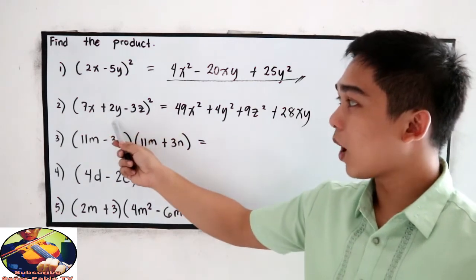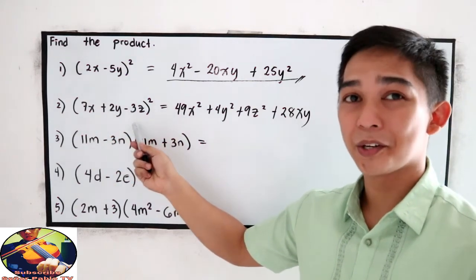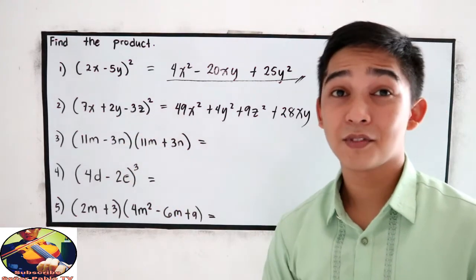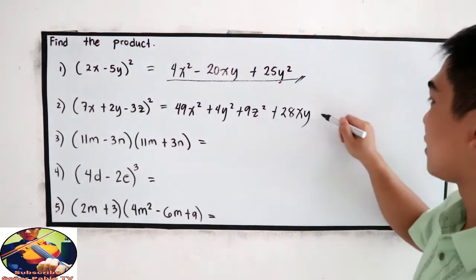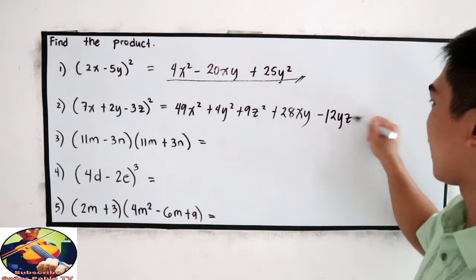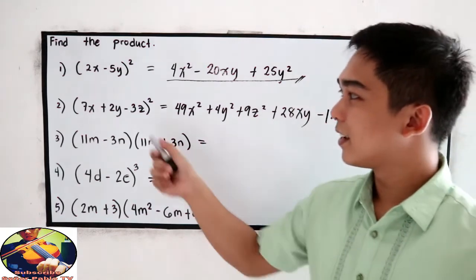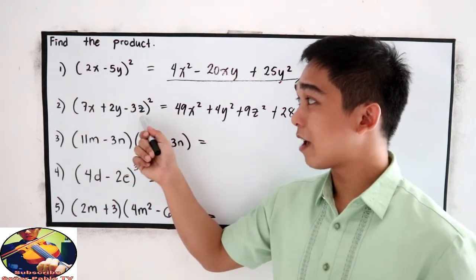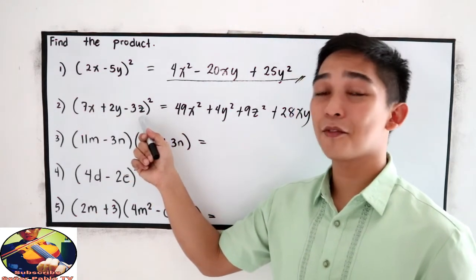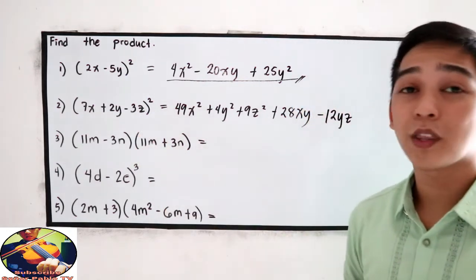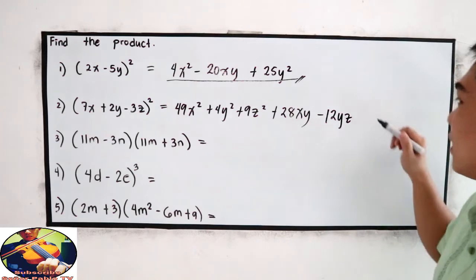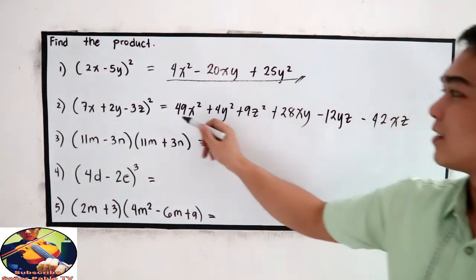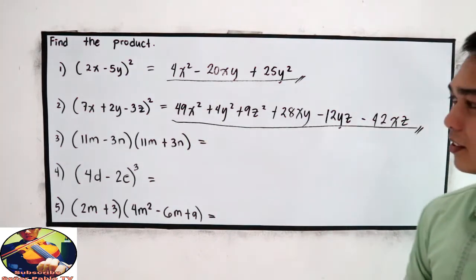Next, 2y, second term times the third term. 2y times negative 3z. Negative 6yz times 2. Negative 12yz. And last step. Multiply the first term and the last term. 7x times negative 3z. That is negative 21xz. Times 2. Negative 42xz. This is now the product.